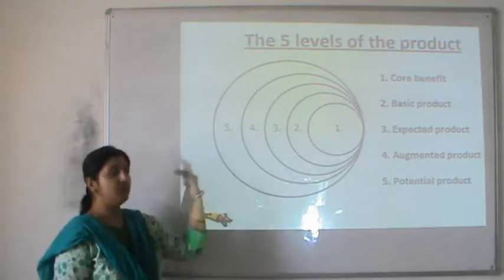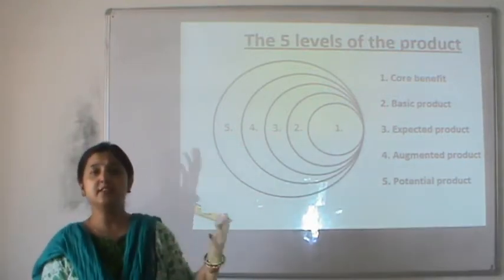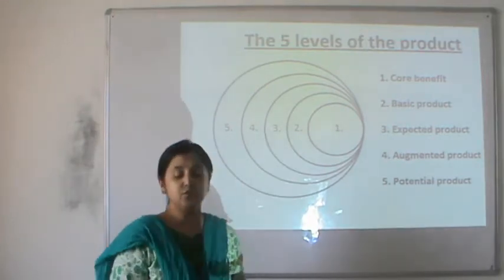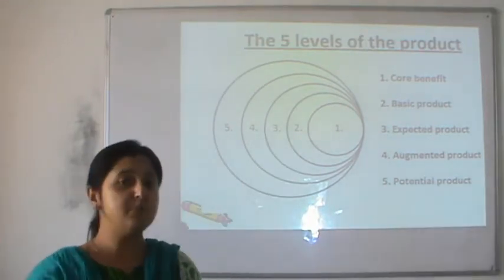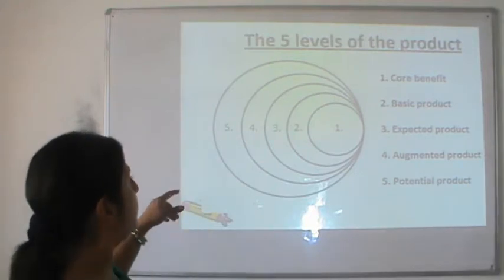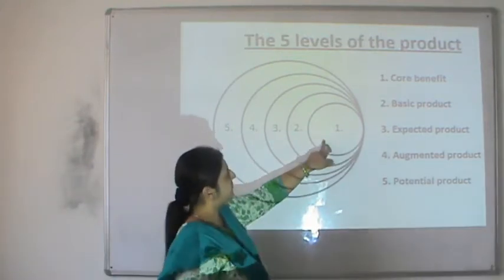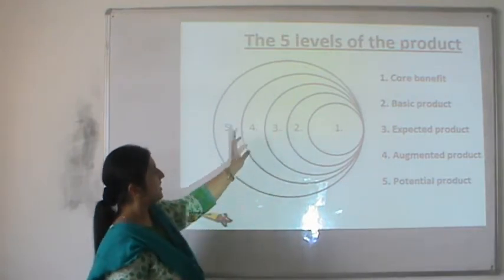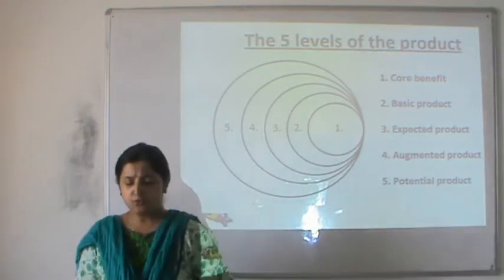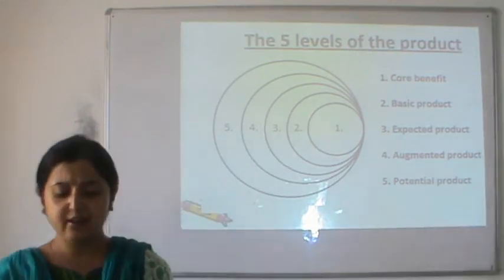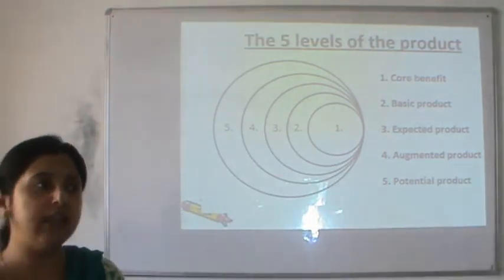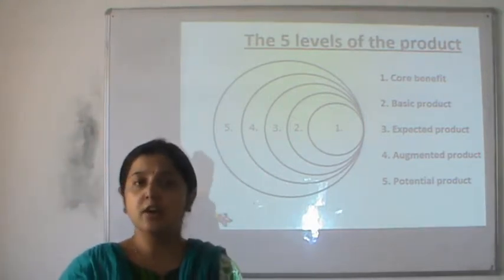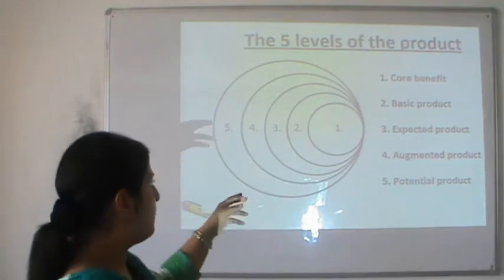This is a five-level product chart given by Kotler. Products exist at five different levels. Level one is the core benefit, level two is the basic product, level three is the expected product, level four is the augmented product, and level five is the potential product. Taking the example of a hotel: the core benefit you expect is a nice and clean place to rest and relax — that's the core benefit.